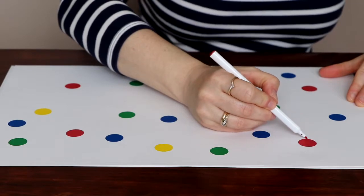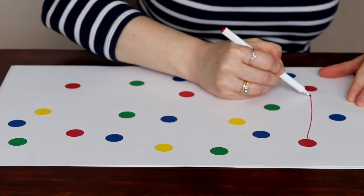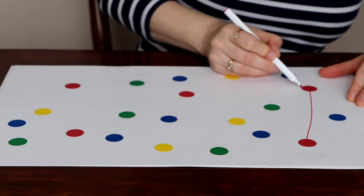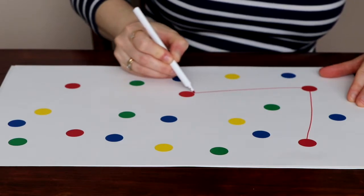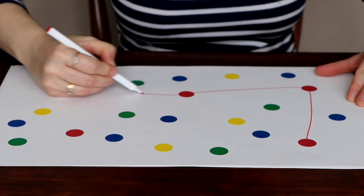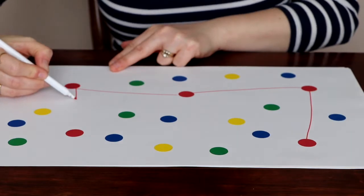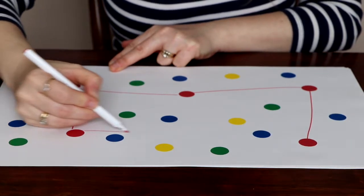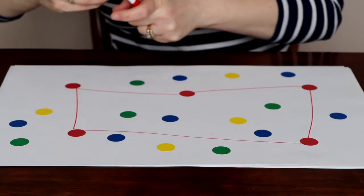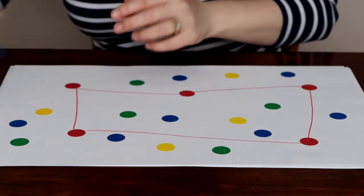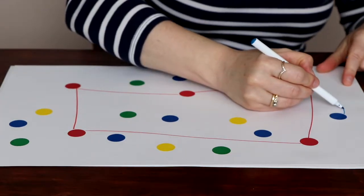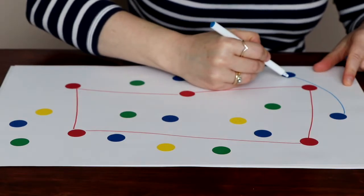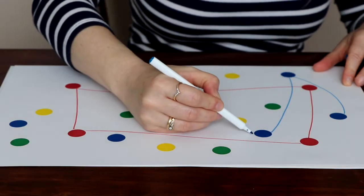Challenge your child to use the red marker, crayon, or colored pencil to connect the red dots. Then encourage your child to use the blue marker, crayon, or colored pencil to connect the blue dots.